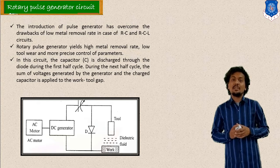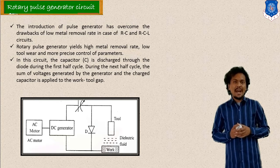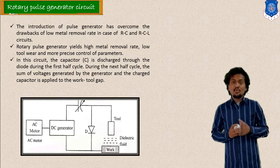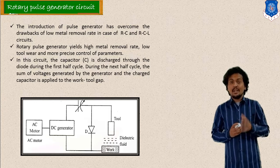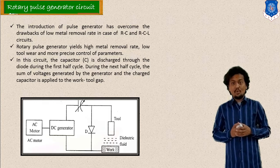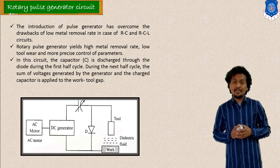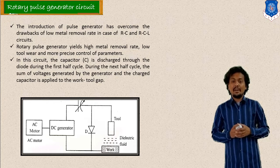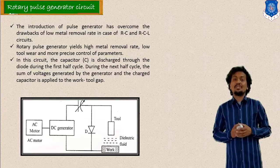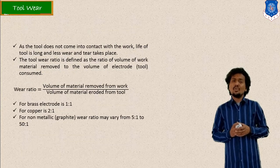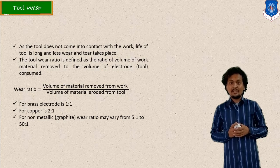In the rotary pulse generator circuit, the current is discharged from a diode. The capacitor is charged through the diode, and in the first half cycle charging is done. In the next half cycle, when voltage is applied, the spark is generated during the charge cycle. This is how the spark generating mechanism works.